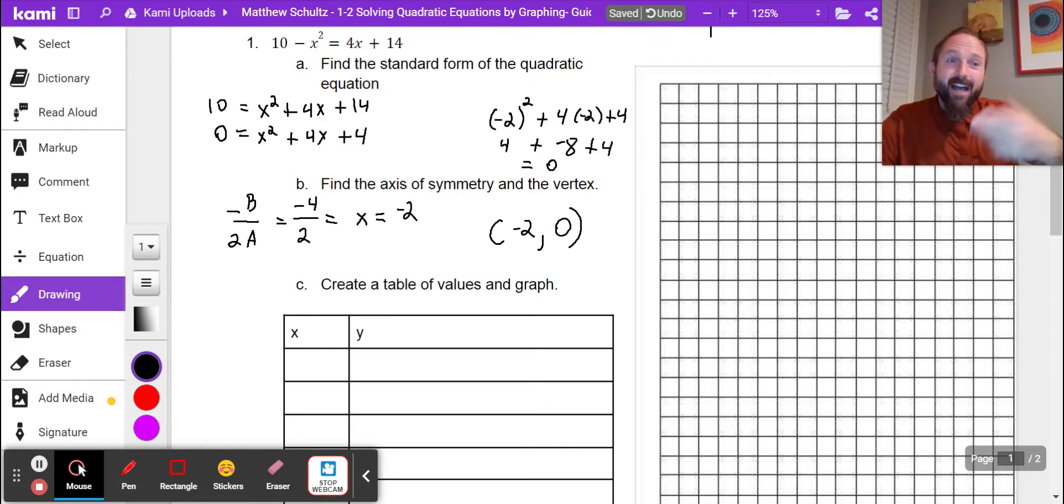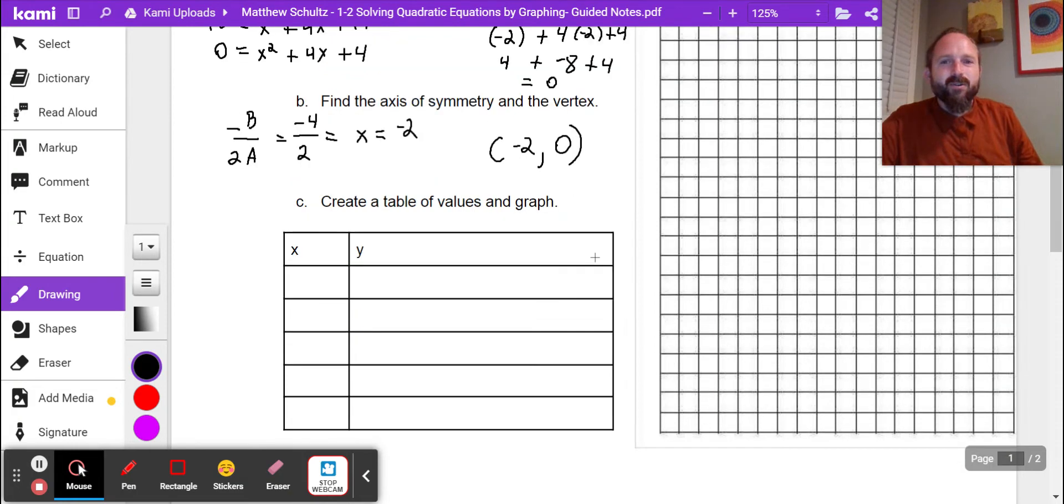I can plug it in. Negative 2 squared plus 4 times negative 2 plus 4. I get 4 plus negative 8 plus 4. Hey look at that, 4 plus 4 is 8 minus 8 is 0. So I know at negative 2, my y value would be 0. That's interesting. I already got a solution. Let's create a table of values and graph it.